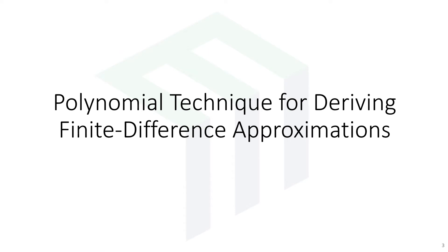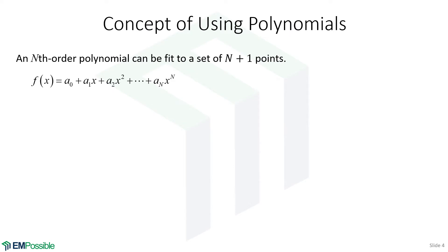The polynomial technique for deriving finite difference approximations. Let's say we have an nth order polynomial, meaning we have x to the n as the highest order exponent. How many points do we need to calculate all of the coefficients in this polynomial? We have a sub 0, a sub 1, a sub 2, all the way up to a sub n. Because we're starting at 0, we have n+1 coefficients — n+1 things to calculate. That means we need at least n+1 points to determine those n+1 coefficients.